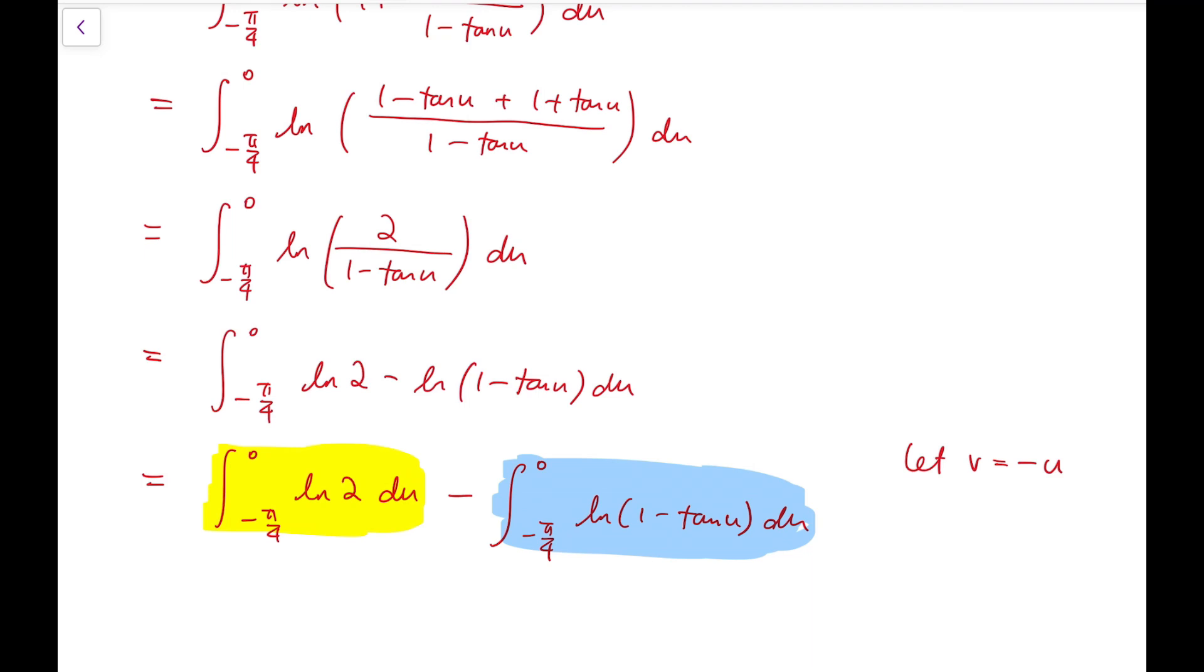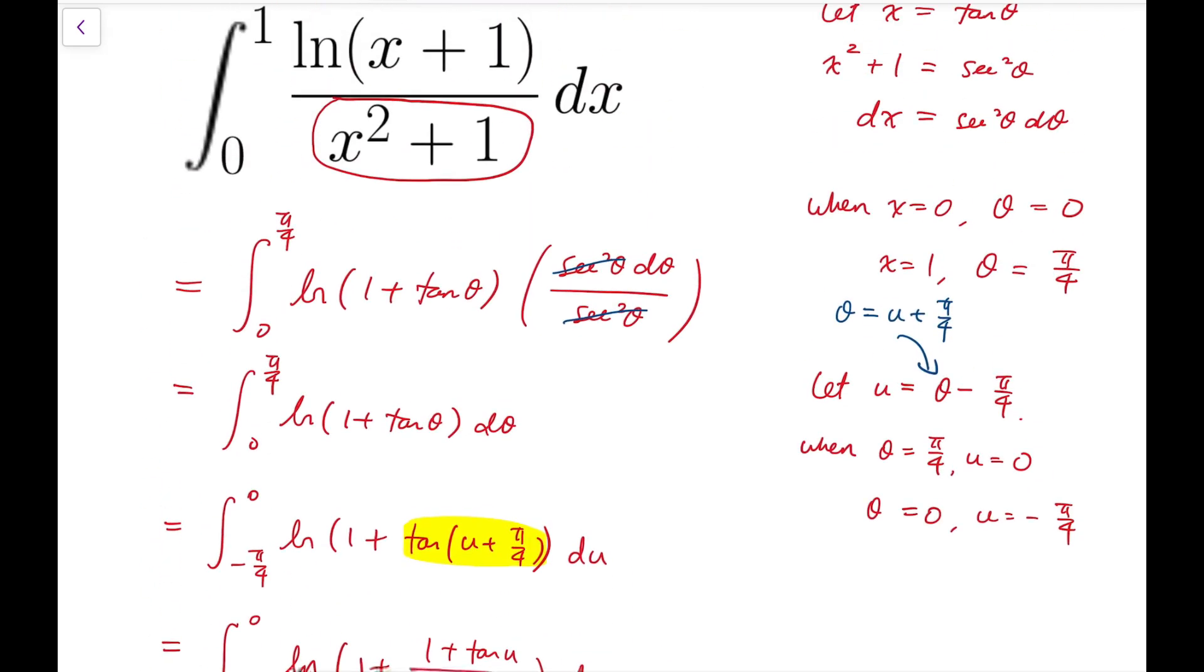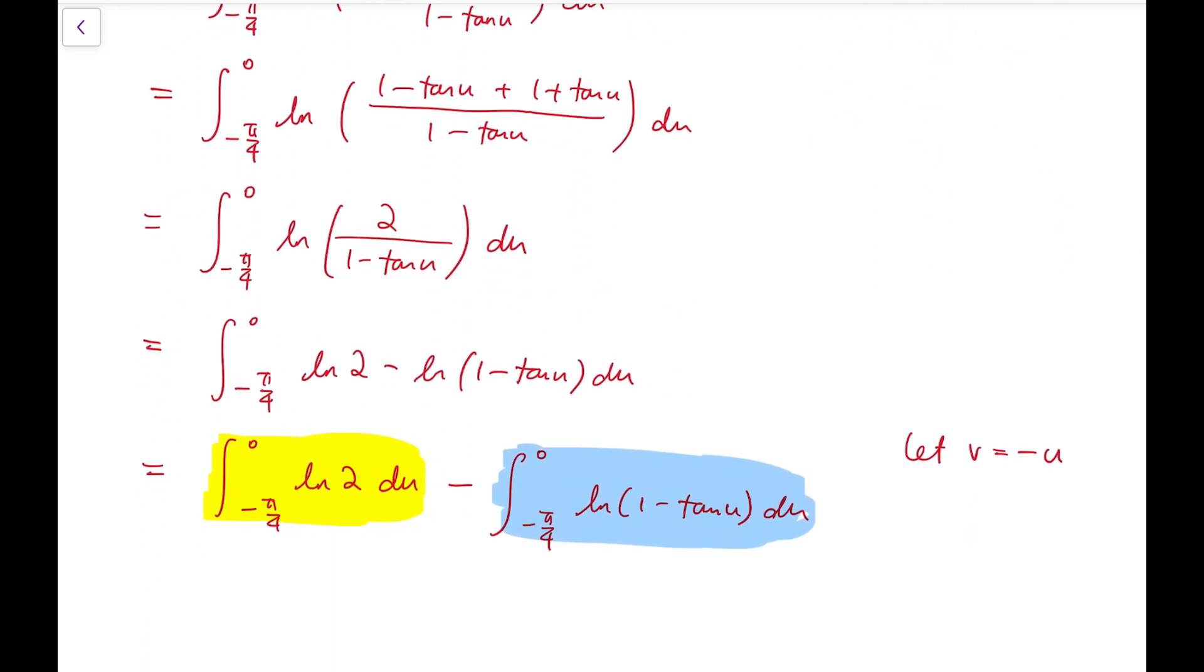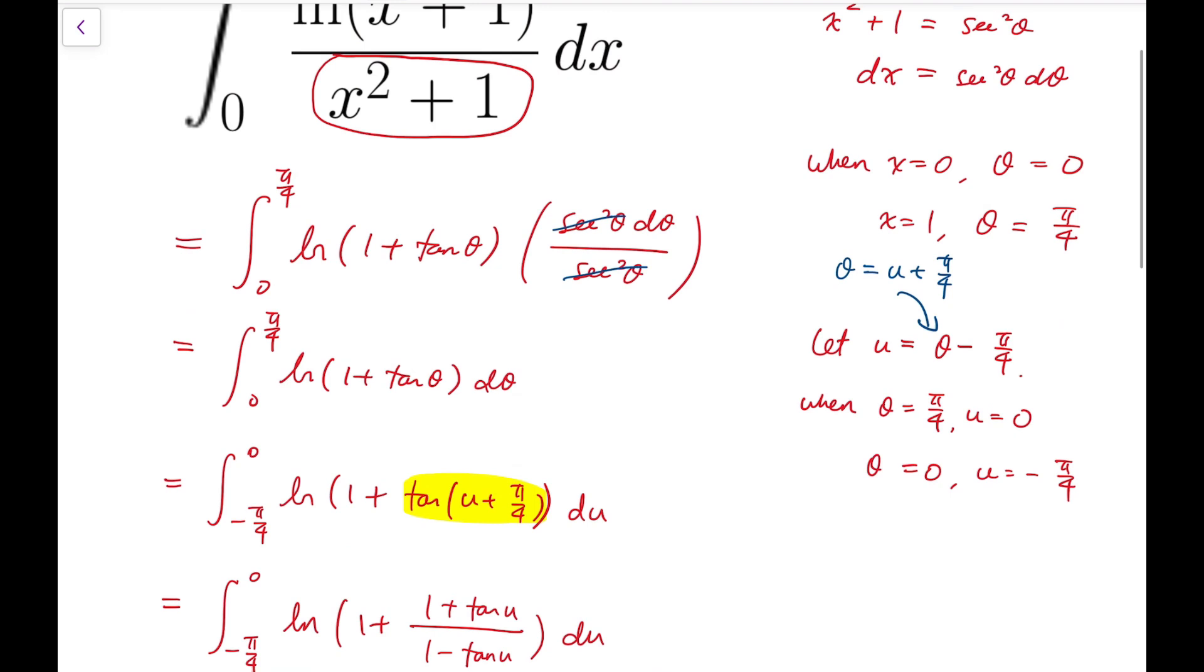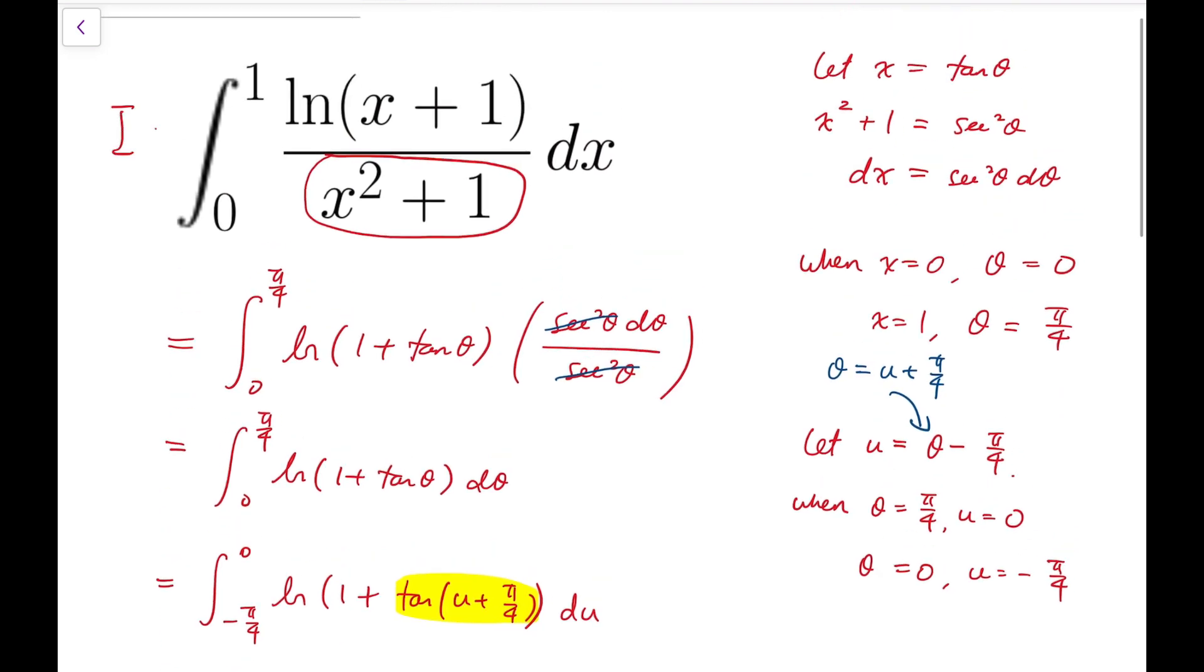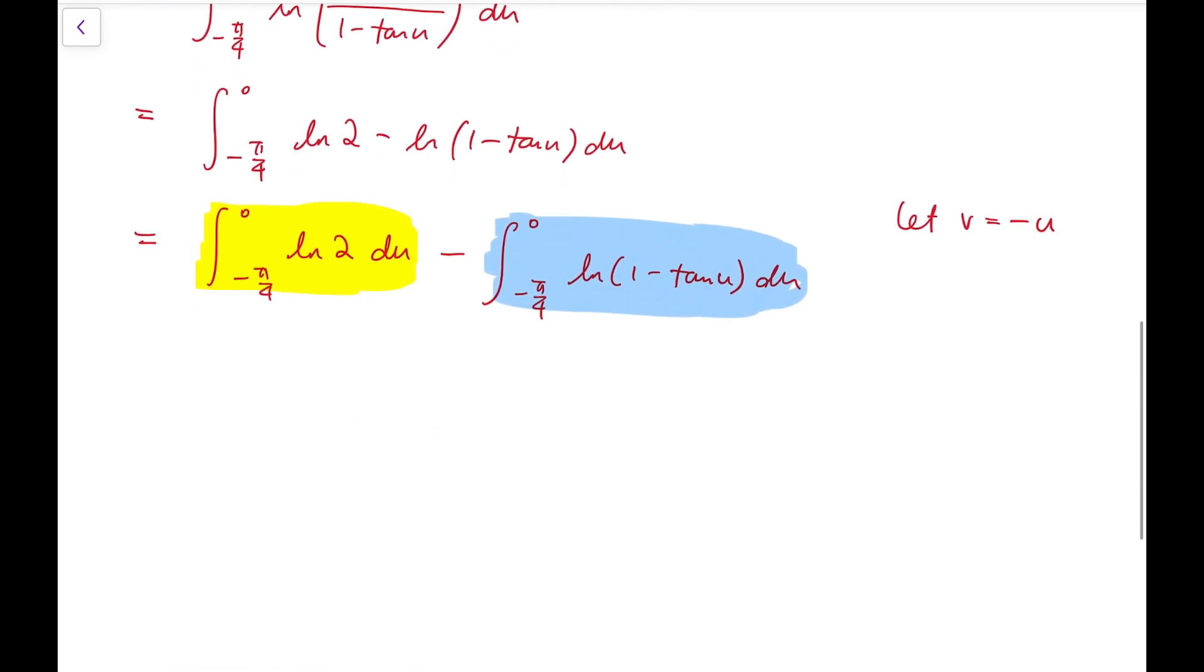Also, under this linear transformation, I've simply went to the negative value of our original limits. I started from 0 to pi over 4, now it becomes minus pi over 4 to 0. So this is simply the negative value of our original limits. I'm going to let I be our original integral, just for convenience.